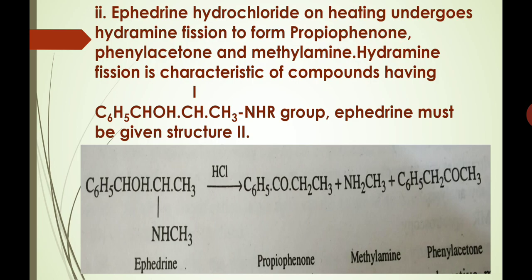To ascertain the probable structure of ephedrine, we perform further chemical reactions. Ephedrine hydrochloride, on heating, undergoes hydramine fission to form propiophenone, phenylacetone, and methylamine. Hydramine fission is characteristic of compounds containing the C₆H₅–CHOH–CH–CH₃–NHR grouping. Therefore, ephedrine must be given structure 2, only then can we explain the formation of propiophenone, methylamine, and phenylacetone. Thus, the probable structure of ephedrine is the second one, as shown in this equation.